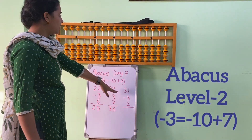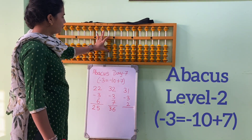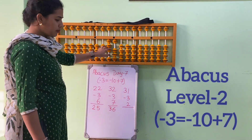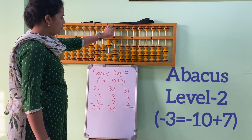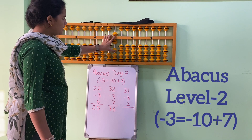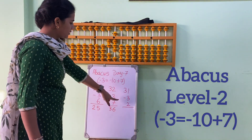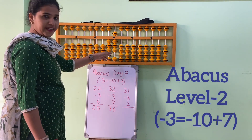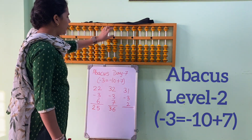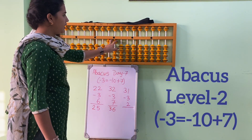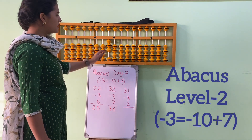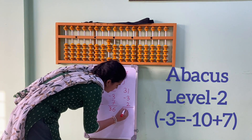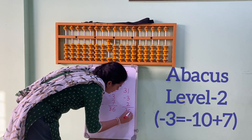The very next sum is 31 minus 3. Minus 3 ka formula: minus 10 plus 7. 5, 6, 7. Plus 2. So what is the formula of plus 2? Plus 10 minus 8. 5, 6, 7, 8. So the answer is 30.